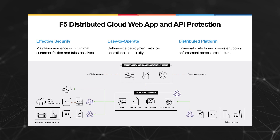One of the unique capabilities of F5 distributed cloud is its ability to provide consistent policy enforcement across clouds and architectures, which will help considerably against security misconfiguration. It is also API-driven in its deployment and operation, providing easy integration into CI/CD pipelines and broader security ecosystems such as event management systems.